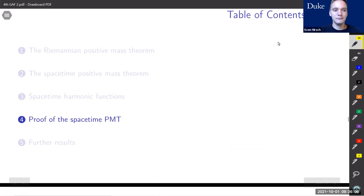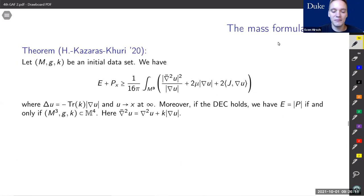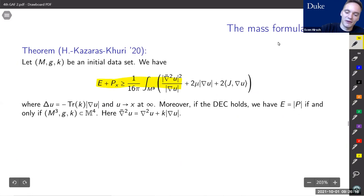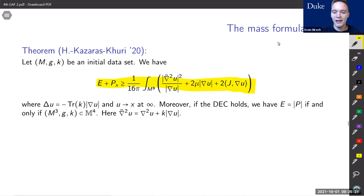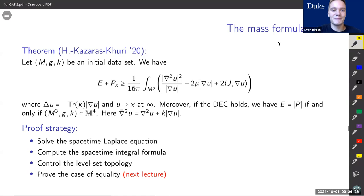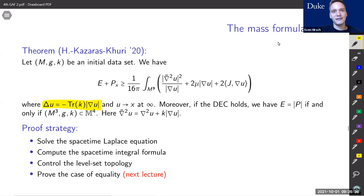Let's move on to the proof of the spacetime PMT. What we want to show is that E plus the momentum in the x-direction is bounded from below by the integral involving the spacetime harmonic function u. To do so, we proceed in four steps. The first step is to solve the spacetime Laplace equation — note that this is a nonlinear equation because of the |∇u| term on the right-hand side. Once we have existence, we go to the computation and prove the mass formula, which is the heart of the argument. To do so, we actually need to control the topology of the level sets of u, which is our third point. Finally, we also need to prove the case of equality, which I will postpone to the next lecture.